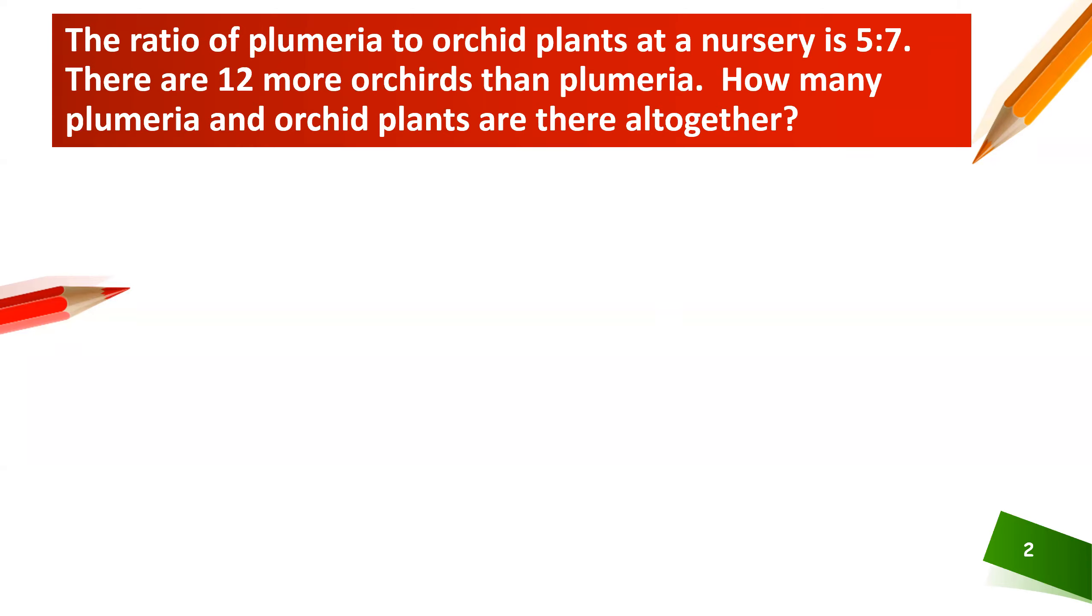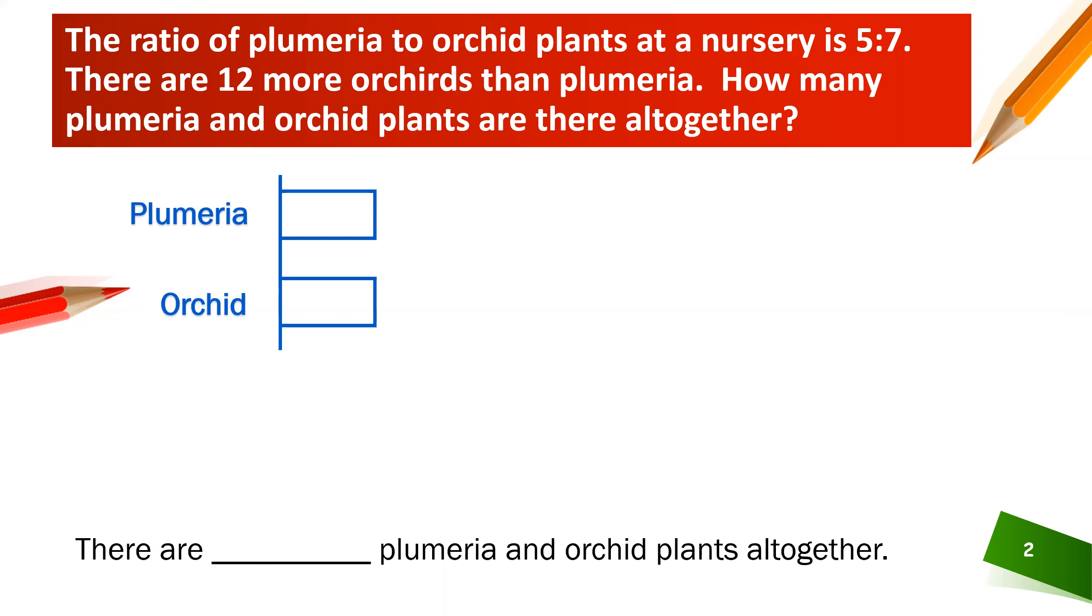Okay, so model drawing steps should be followed. The first thing we're going to do is write our answer sentence. There are blank plumeria and orchid plants all together. Who and what are involved here? We have plumeria and we have orchids. Let's start with having a bar for each one of those. Right now they are the same amount which isn't what the problem is saying, so we'll go back and digest the information.